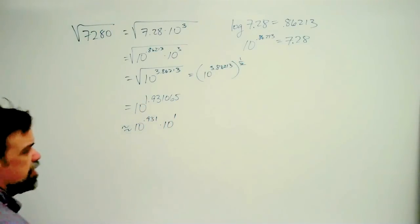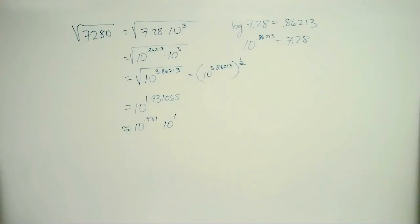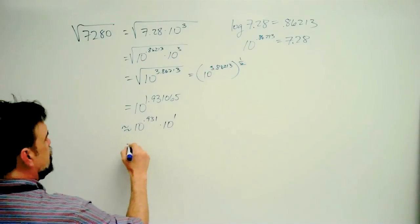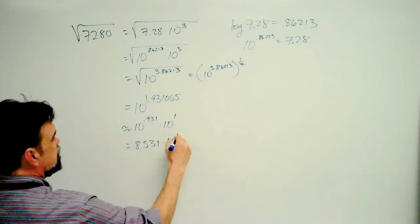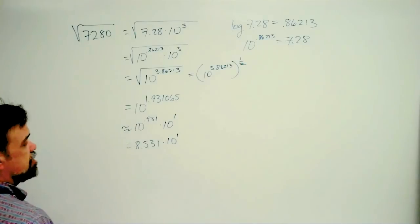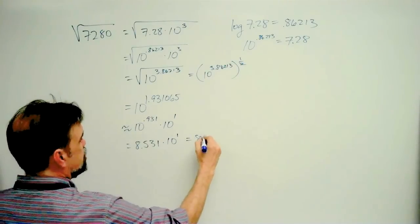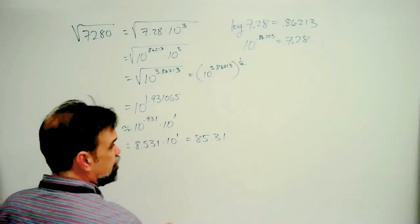And 10 to the 0.931, I find out that that is 8.531 times 10 to the 1. So there's my answer in scientific notation, and that is, of course, 85.31.